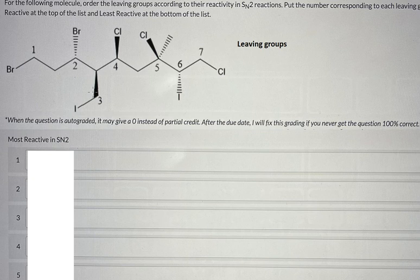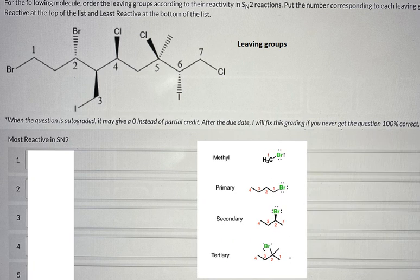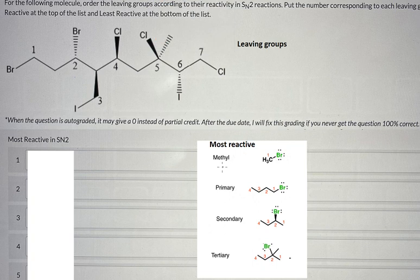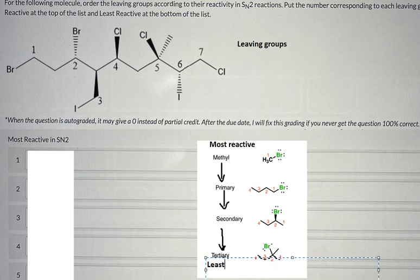Now I will show you the technique on how to answer this one. Here is the formula: we know that at the top is about the most reactive, and going down here is about the least reactive. The next one we have hydrogen, so we need to put it like this.